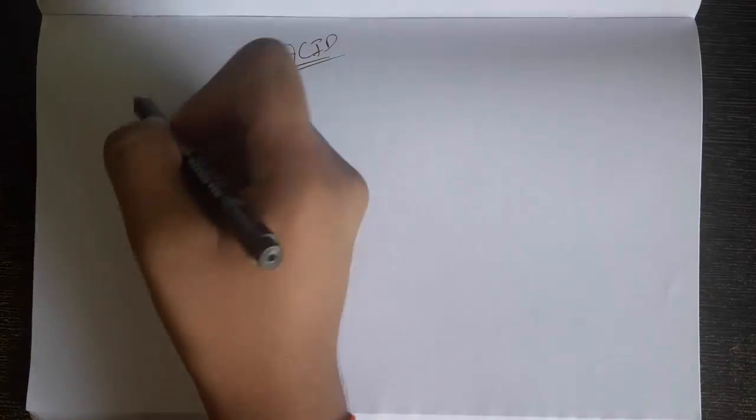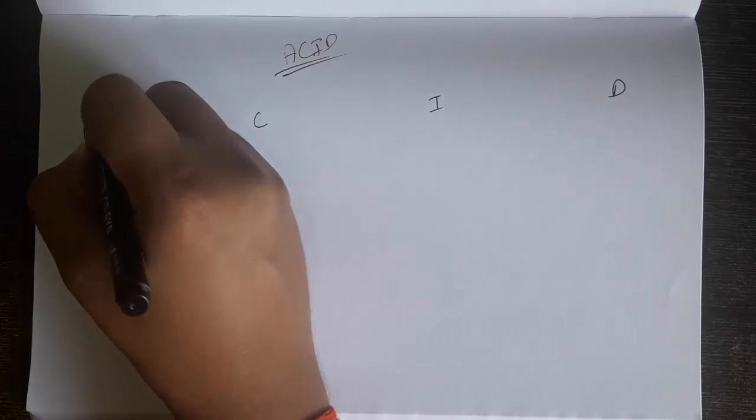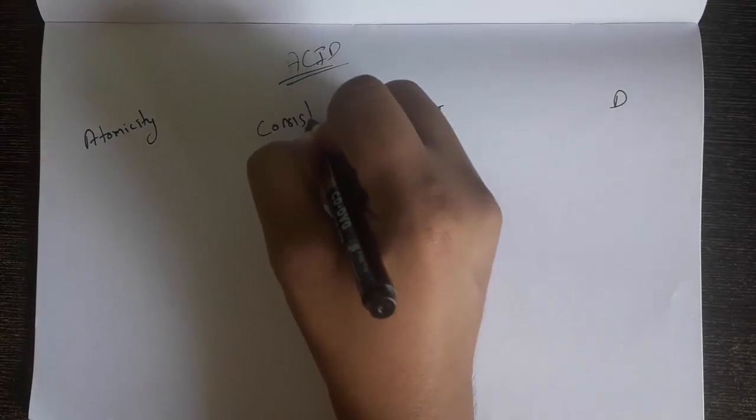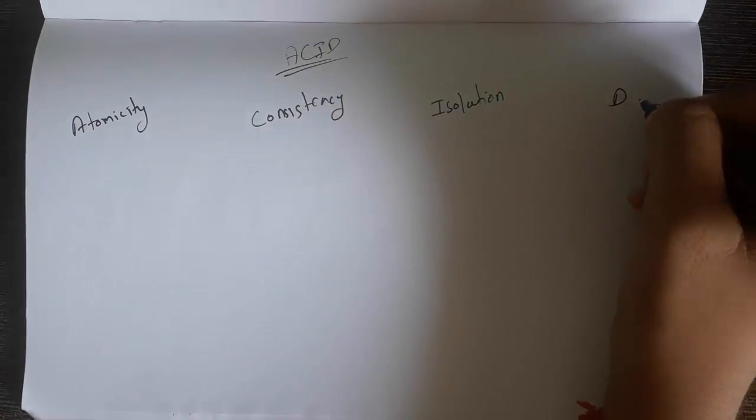So what are ACID properties? These four words stand for four different things: A, C, I and D. A stands for Atomicity, C stands for Consistency, I stands for Isolation and D stands for Durability.